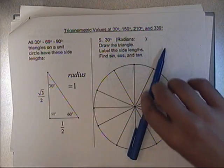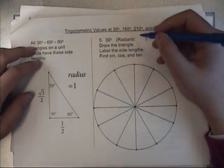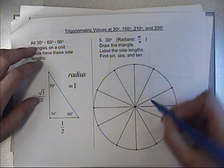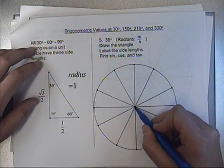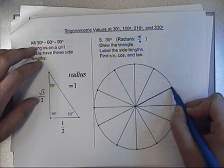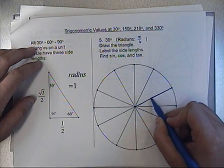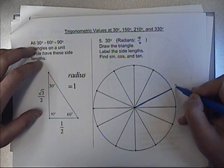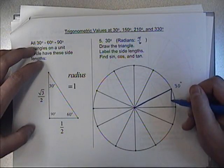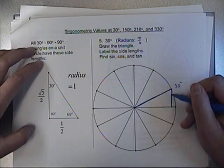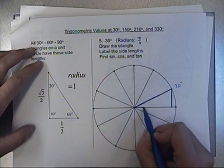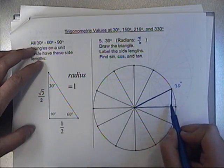30 degrees is the same as pi over 6 radians, and that would be right here. So I draw out to 30 degrees, and then towards the x-axis again, and then back towards the origin — there's my right triangle.